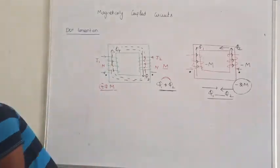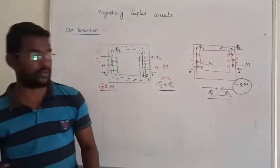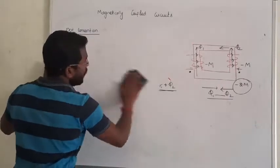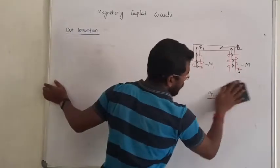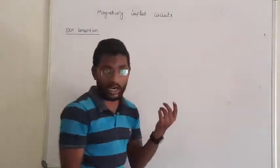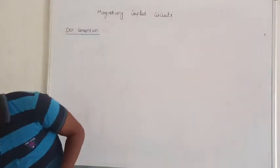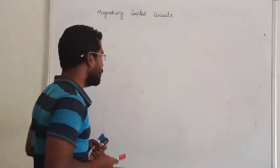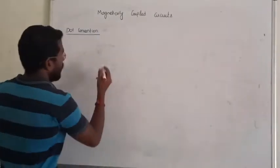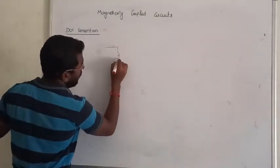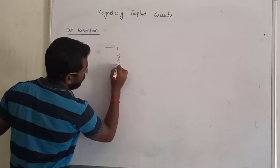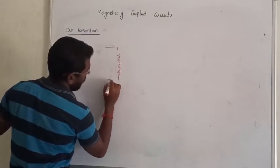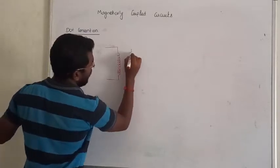Now let us see the dot convention in terms of how we draw the equivalent circuits. Now we are drawing the equivalent circuit — that is very simple. We are taking two coils of a transformer and replacing them with an equivalent representation. Let me show you clearly.